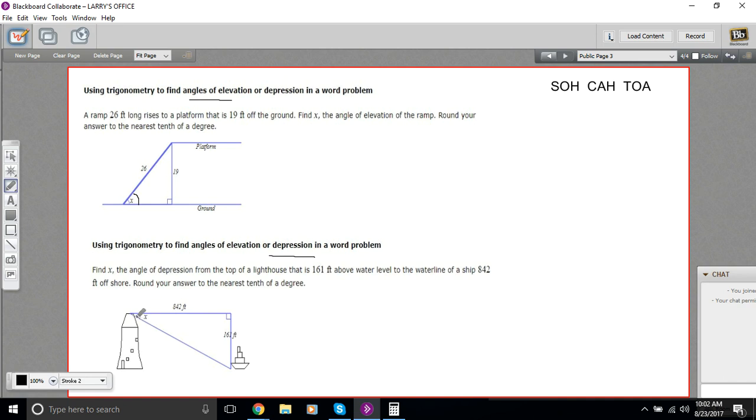In this other situation, we have a lighthouse, and the person in the lighthouse is looking down at a ship, and what's the angle at which they have to look down? That's our angle of depression right there. Luckily, in both these cases, we have nice diagrams, so this should be pretty easy to solve with a little bit of trigonometry. Let's read the first one.